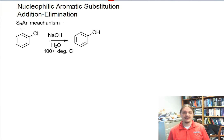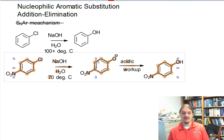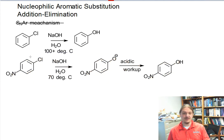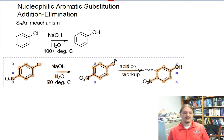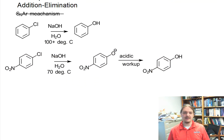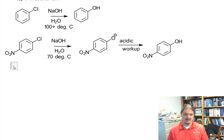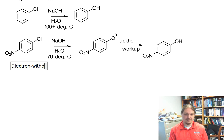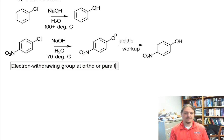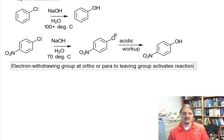In the introductory video to nucleophilic aromatic substitution, I shared that this nucleophilic substitution reaction works, but it requires extremely elevated temperatures. Now I want to share that a variation of this reaction works at lower temperatures when there's an electron withdrawing group at the ortho or para position. I want to write this down: electron withdrawing group at ortho or para to leaving group activates this reaction.